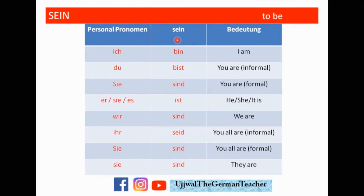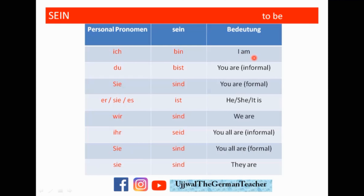Sein is the verb. Ich bin. Du bist. Sie, Sein. Er, sie, es — ist. Wir, Sein. Ihr, seid. Sie, Sein. So the meanings are also written here. Ich bin is basically I am.